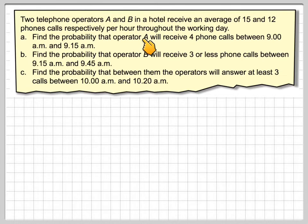Find the probability that operator A will receive 4 phone calls between 9 am and 9:15 am, find the probability that operator B will receive 3 or less phone calls between 9:15 am and 9:45 am, and find the probability that between them the operators will answer at least 3 calls between 10 am and 10:20 am.